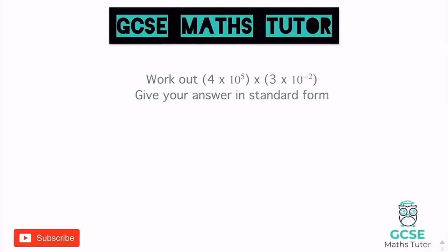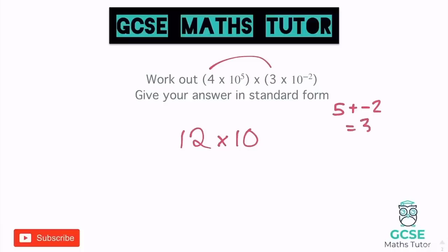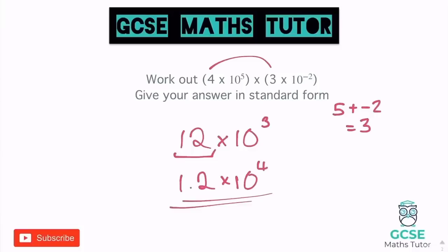For 4 × 10⁵ × 3 × 10⁻², let's apply the standard form multiplication trick. Do 4 times 3, which gives 12, then deal with the powers by adding them: 5 plus negative 2 is 5 minus 2 equals 3. So that's 12 × 10³. But 12 is not between 1 and 10, so we adjust: make it 1.2 and increase the power by 1 to get 4. Final answer: 1.2 × 10⁴.